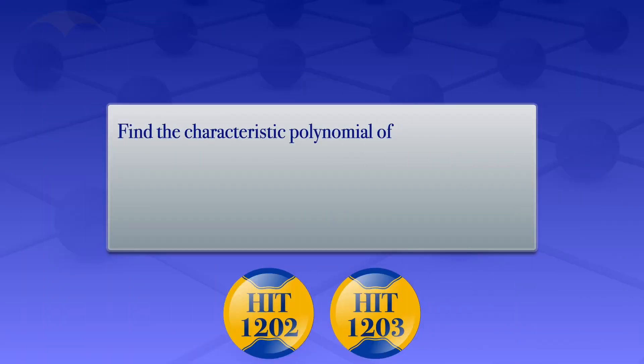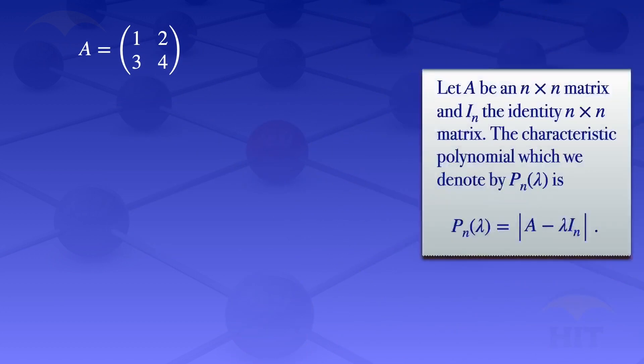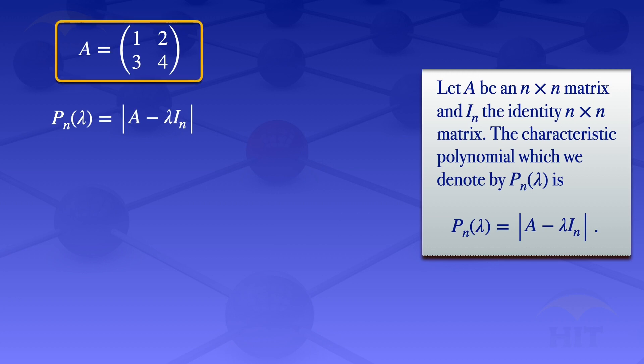In this tutorial I'm going to find the characteristic polynomial of the matrix A, which has elements one, two, three, four. By definition, the characteristic polynomial is the determinant of A minus lambda I_n, where I_n is the identity matrix. So in this case, the characteristic polynomial P_n of lambda is equal to the determinant of A minus lambda I_n.